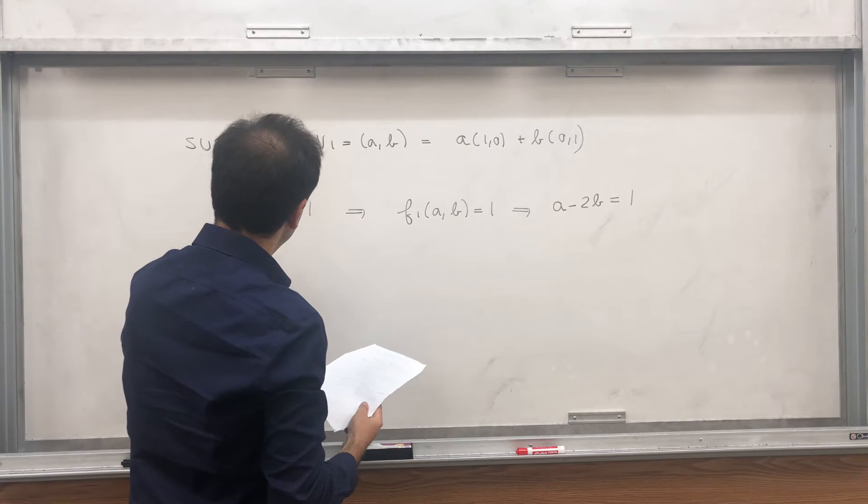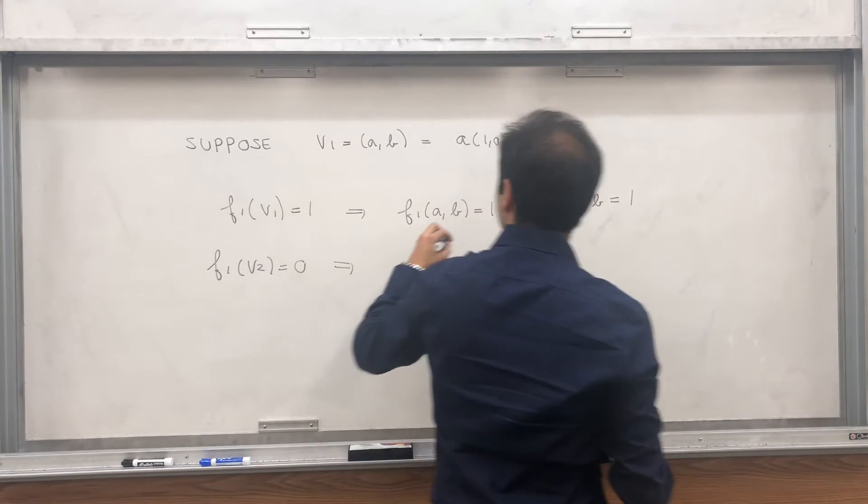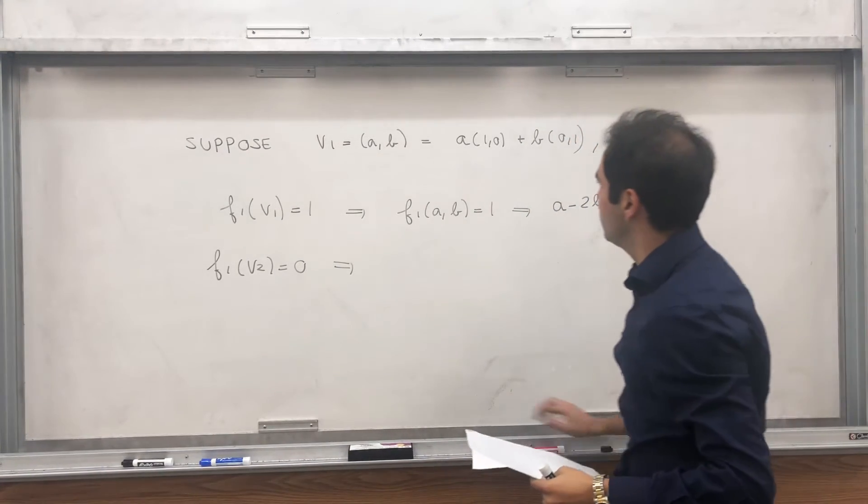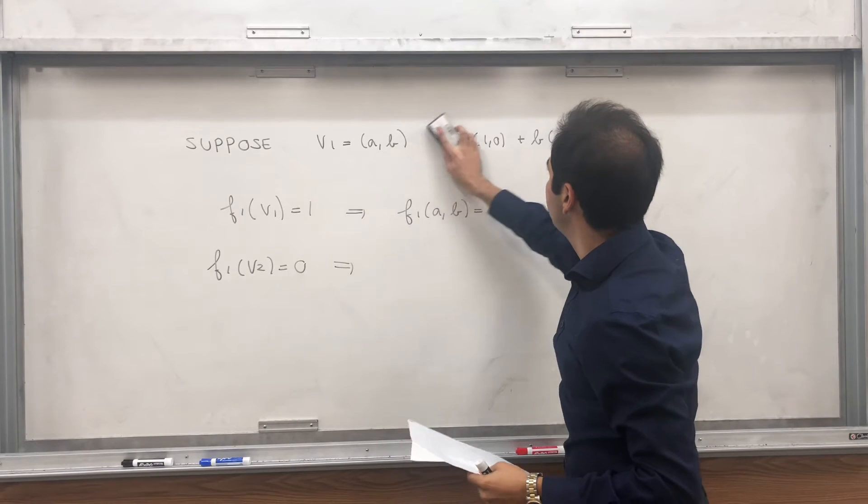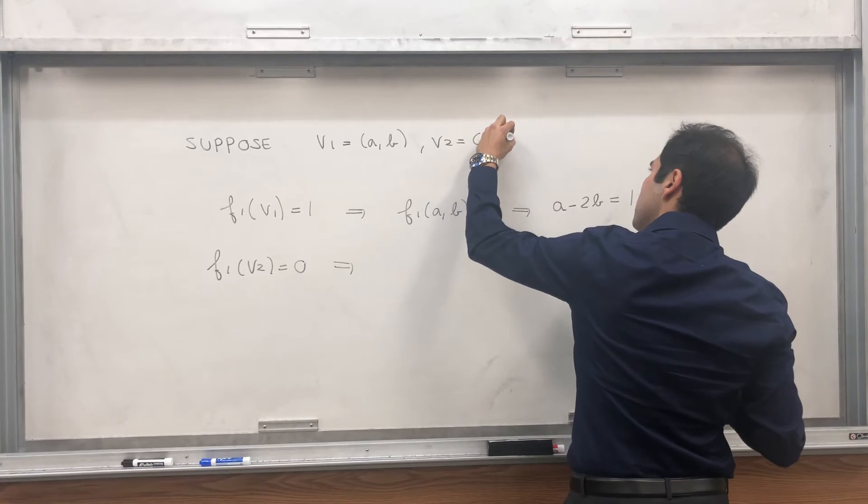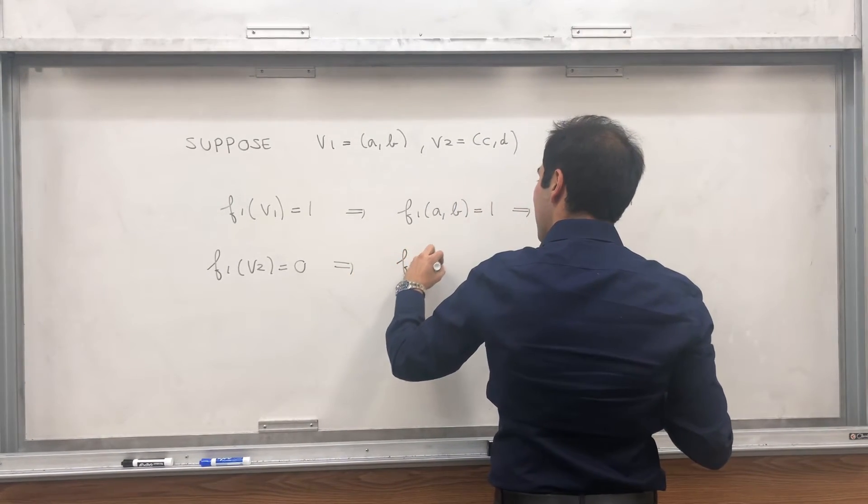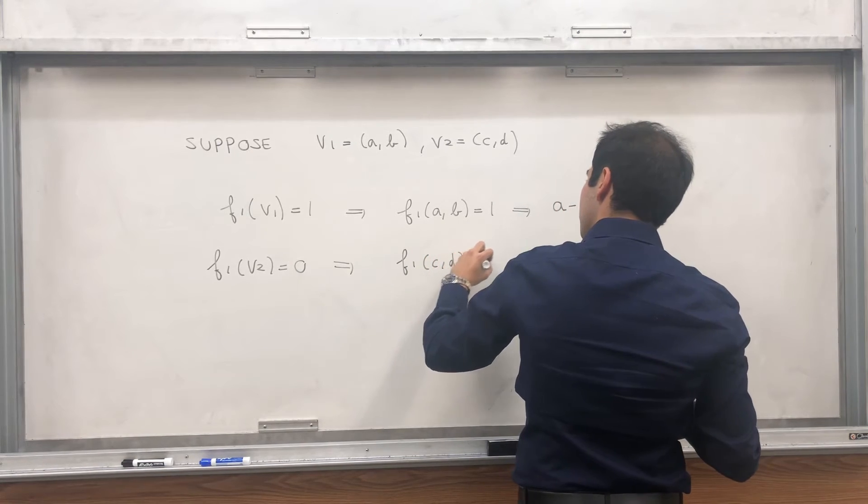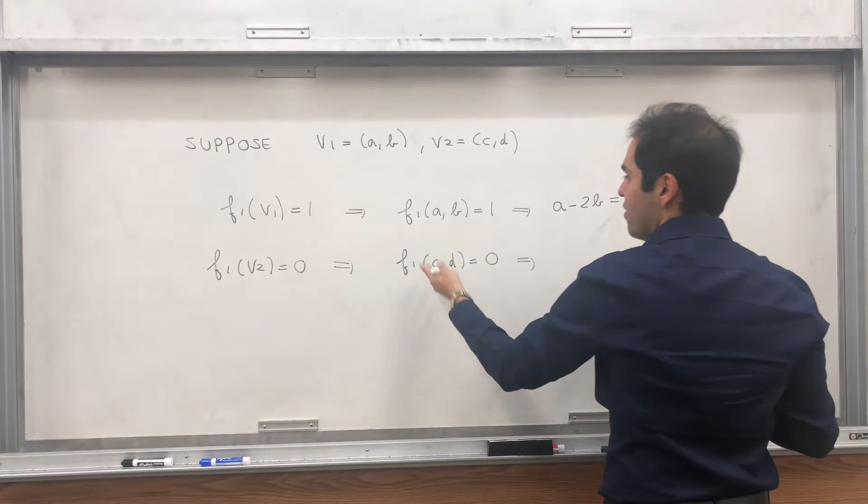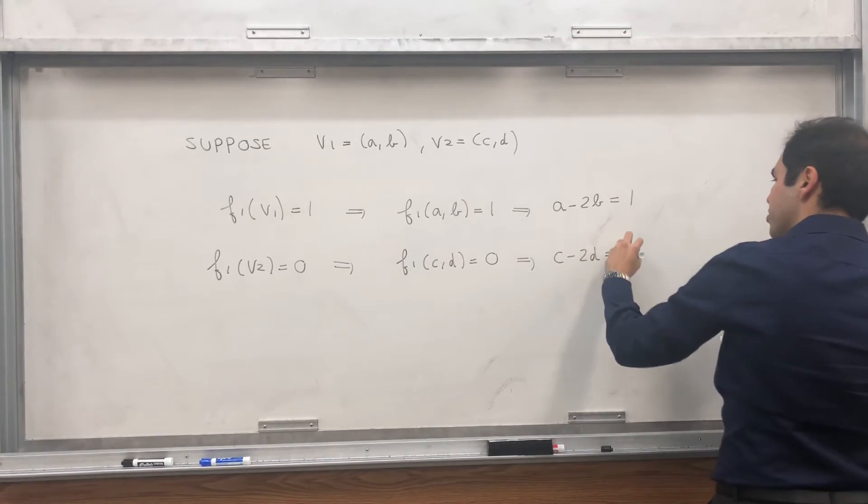And let's see, f1 at V2, that equals 0. So V2, let's say, equals, we don't even need that other fact, so V2 is cd. So f1 at V2 is 0, so f1 at cd equals 0, and therefore, using the definition again of f1, we get c minus 2d equals 0.